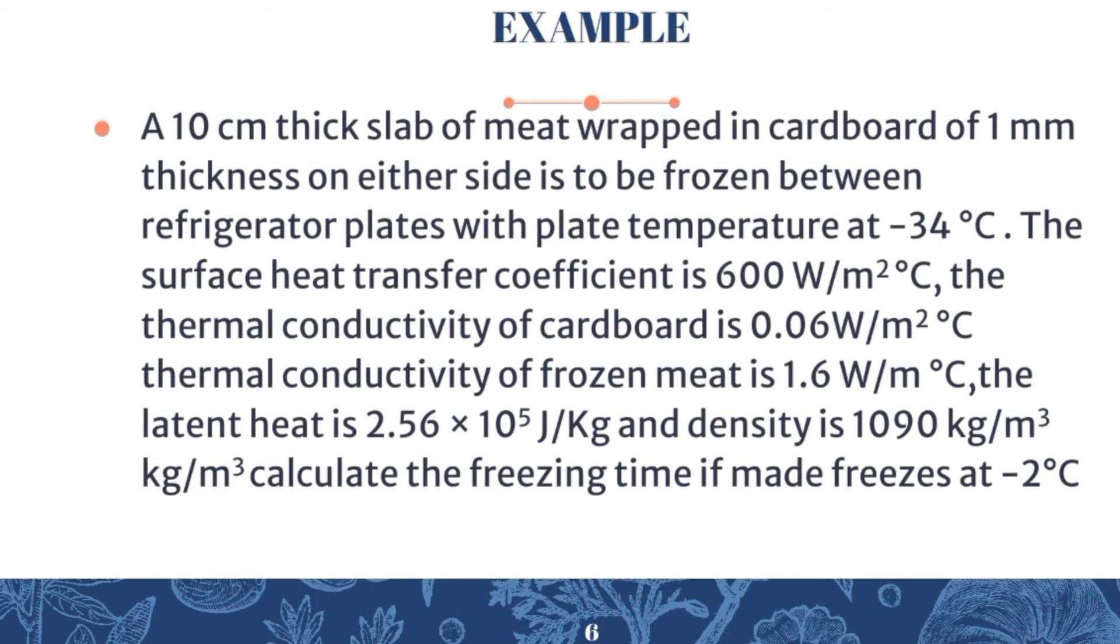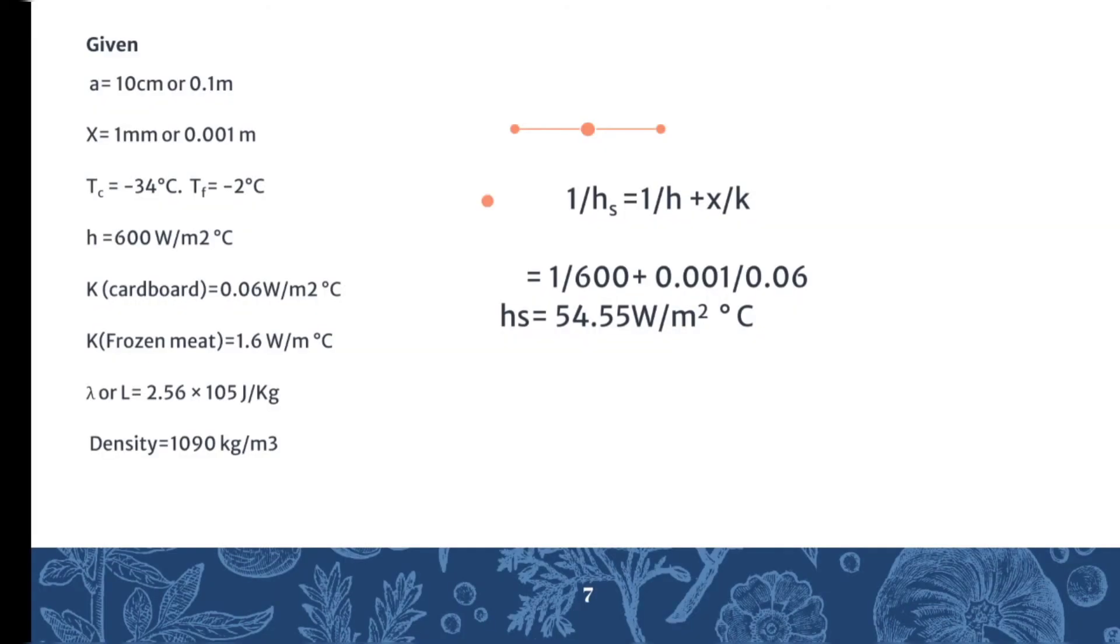The thermal conductivity of frozen meat is 1.6 W/m°C, the latent heat is 2.56 × 10⁵ J/kg, and density is 1090 kg/m³. Calculate the freezing time if meat freezes at -2°C.